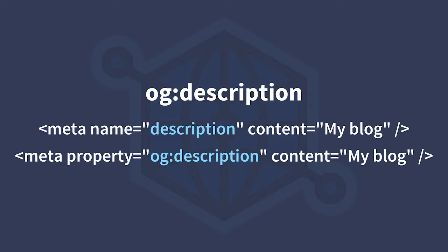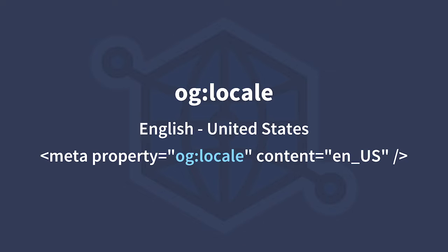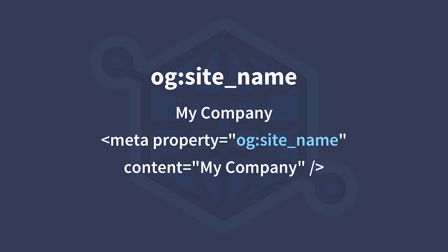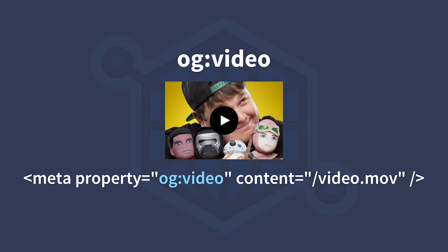Once we have the basics down, there are a couple other tags to keep an eye out for. The description tag might look similar to your meta description. The locale tag defines your language and territory for that set of tags. The site name would be the actual website name — so for instance, with my website, the name is Colby Fayok, but the page title for a blog post would be the blog post name. The video tag functions similar to your image tag but for video content, so it'll be a URL.